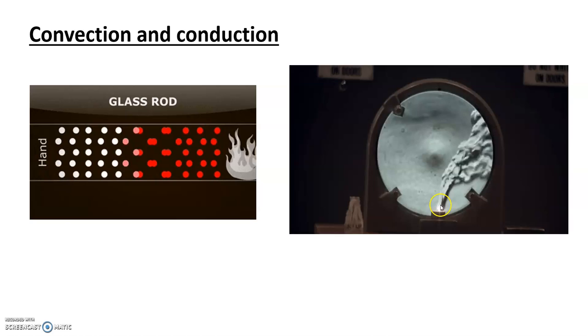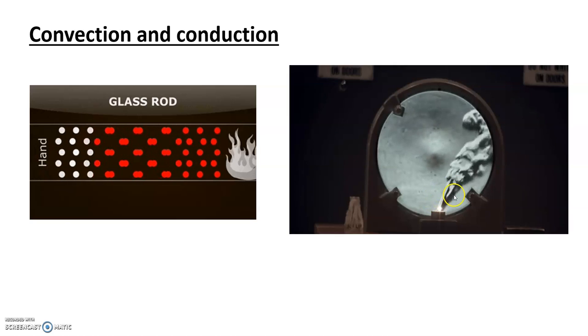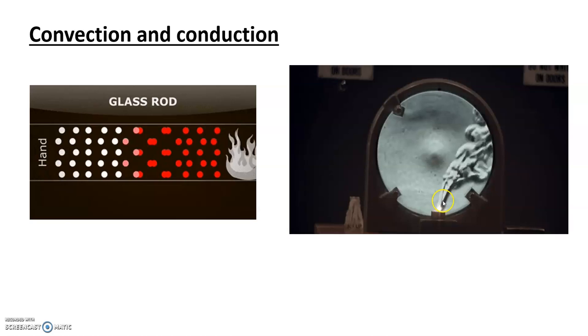These particles are gaining more energy, so they're moving quicker. And if those particles move quicker, they're going to take up more space. If the particles have taken up more space, then the density of that bit of air is going to go down.